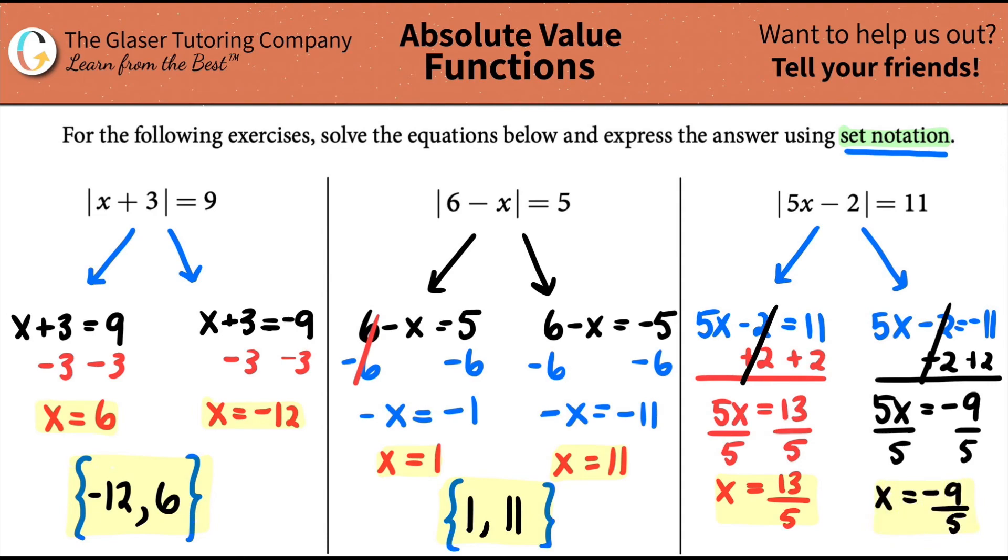Unless I want to turn it into a mixed fraction, but nobody likes those. Set notation. Which one is the more negative or the least positive? And which one is the higher number? Well, this one's a positive. And this one is a negative. So this one is going to go on the left. And this one's going to go on the right. We got negative 9 over 5 comma 13 over 5. And there is your set notation.